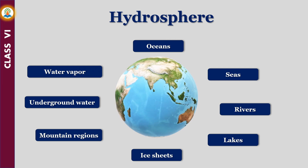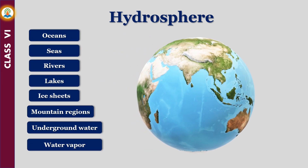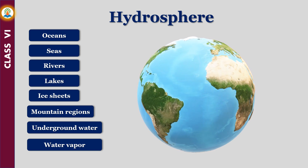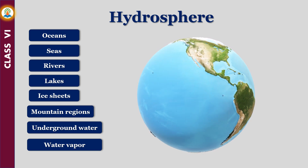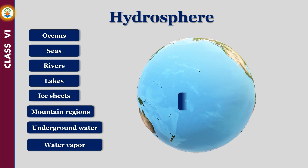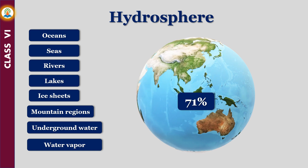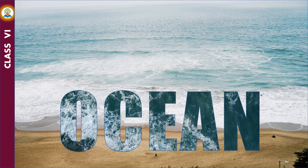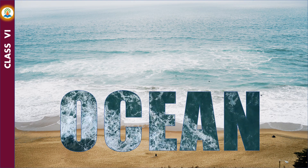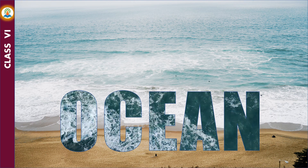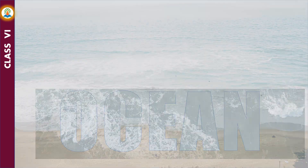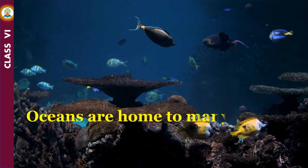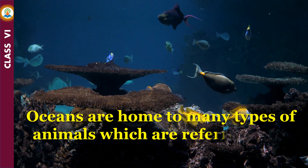In fact, our earth is often referred to as a watery planet. This is because about 71 percent of the surface of the earth is covered with water. Oceans are home to many types of animals which are referred to as marine life.